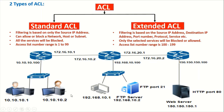Similarly, if I have a rule to allow only user 10.10.10.2, and user 10.10.10.1 tries to access the same FTP server, the router will check its ACL. The ACL only permits 10.10.10.2, not .1, so that traffic is denied. Also, if I want to allow the entire network, I can permit the entire subnet instead of a single user — so any user from that subnet will be allowed.